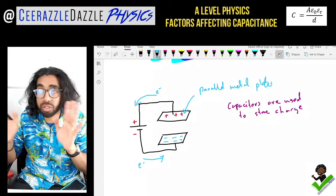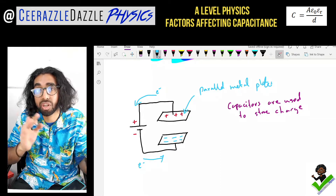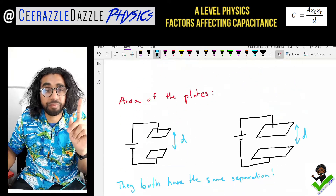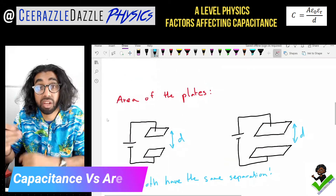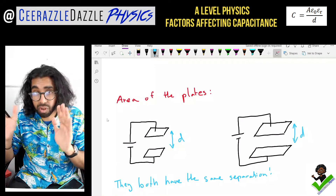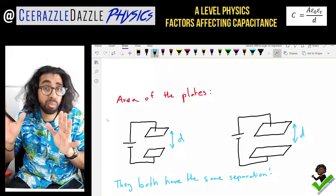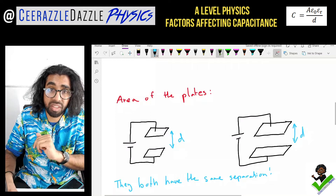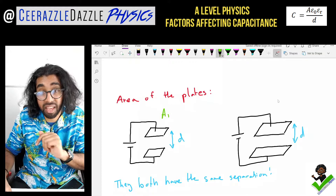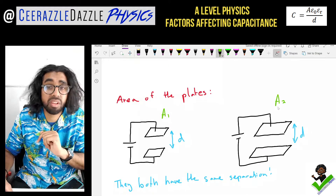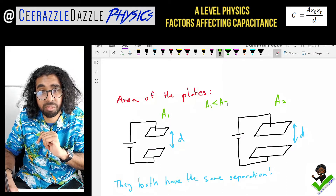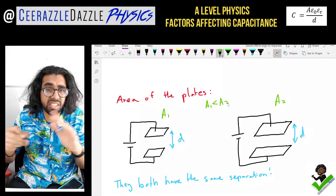What factors affect the capacitance — what factors can actually affect how much charge I can store? The first one is the area of the plates. I've drawn two separate scenarios: on the left-hand side we have a smaller surface area, and on the right a larger one. We can say that area A1 is less than area A2. The separation between them is the same.